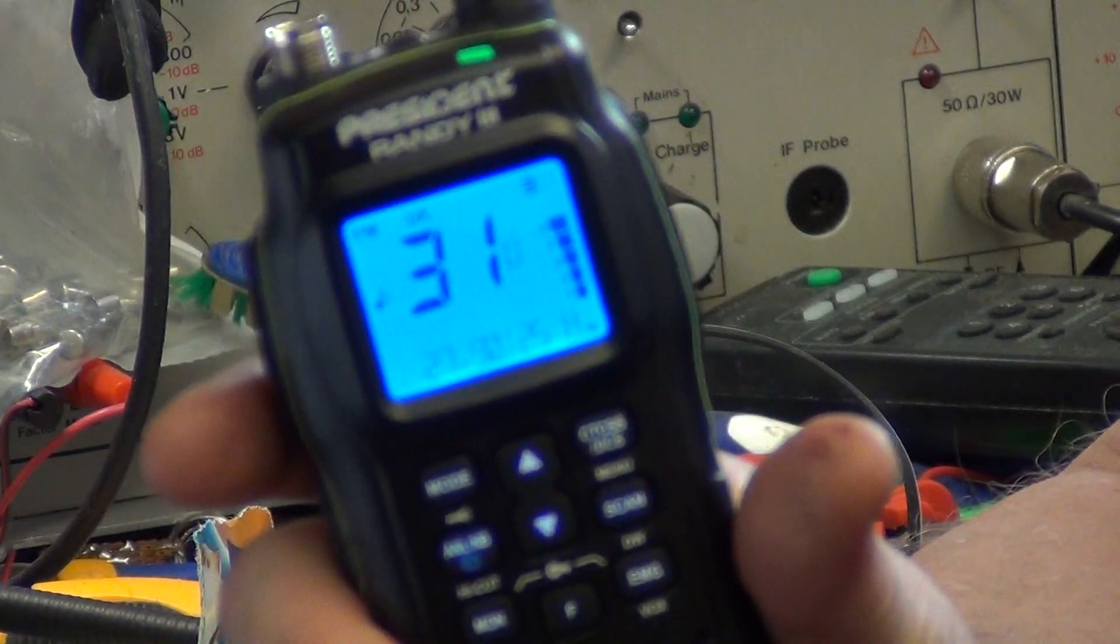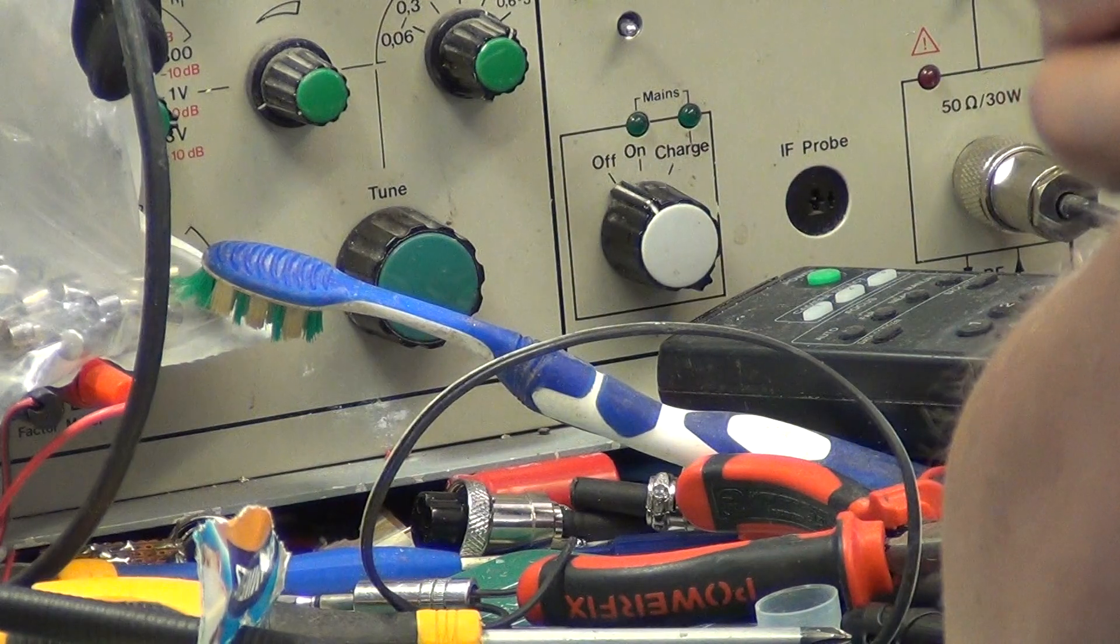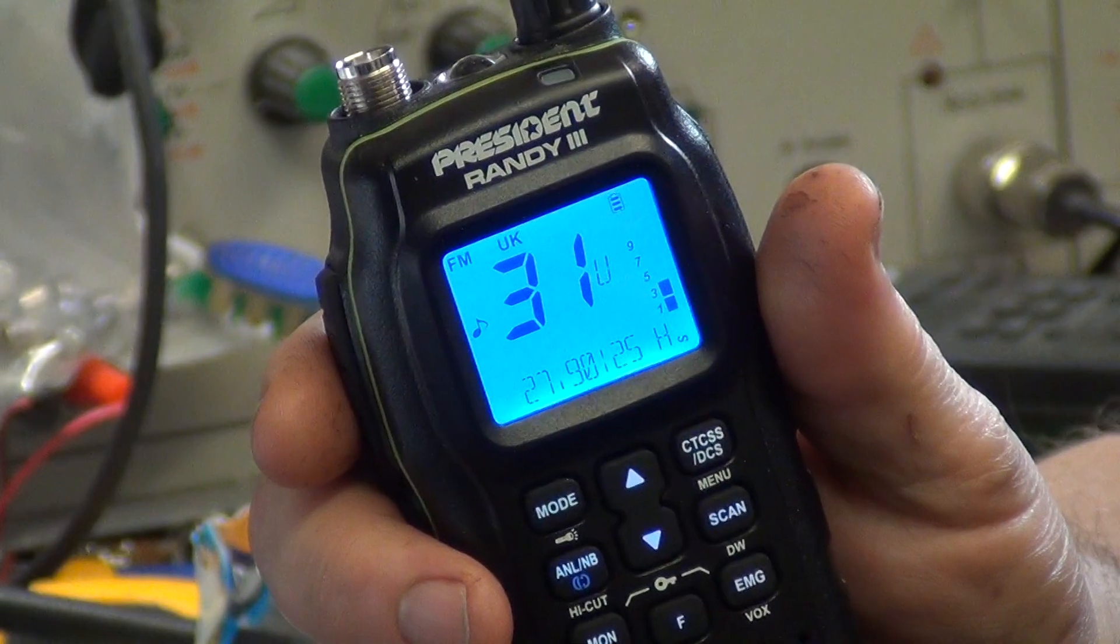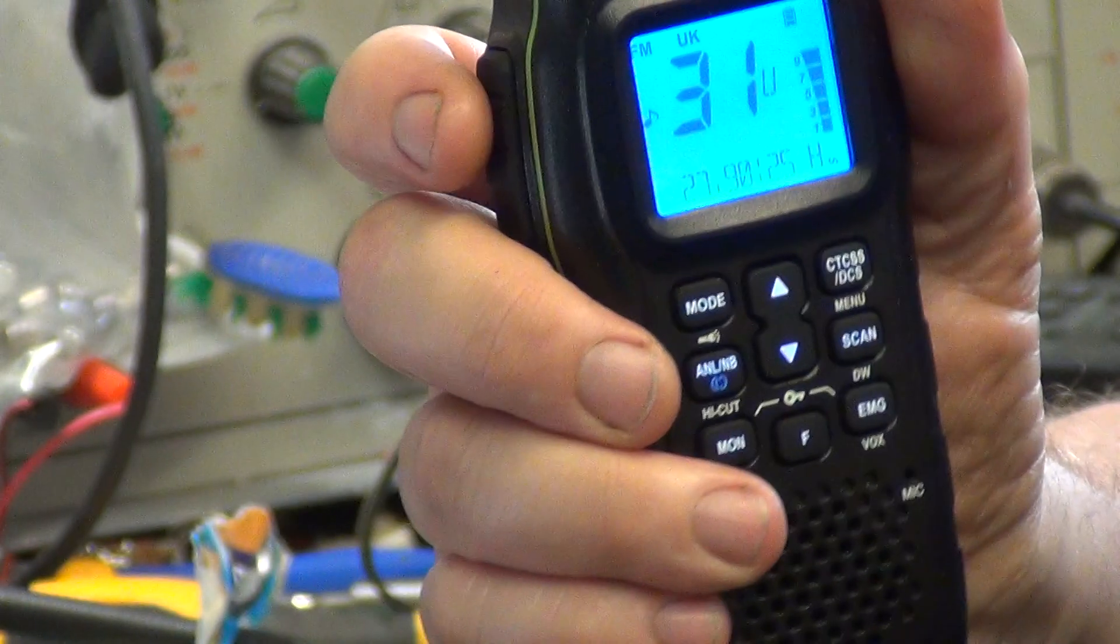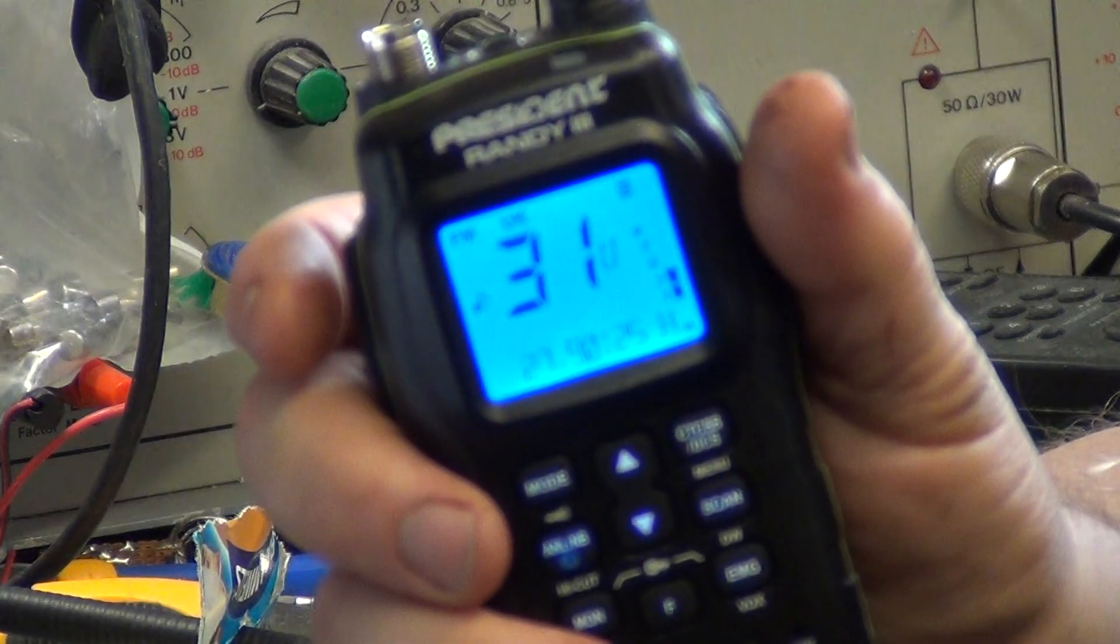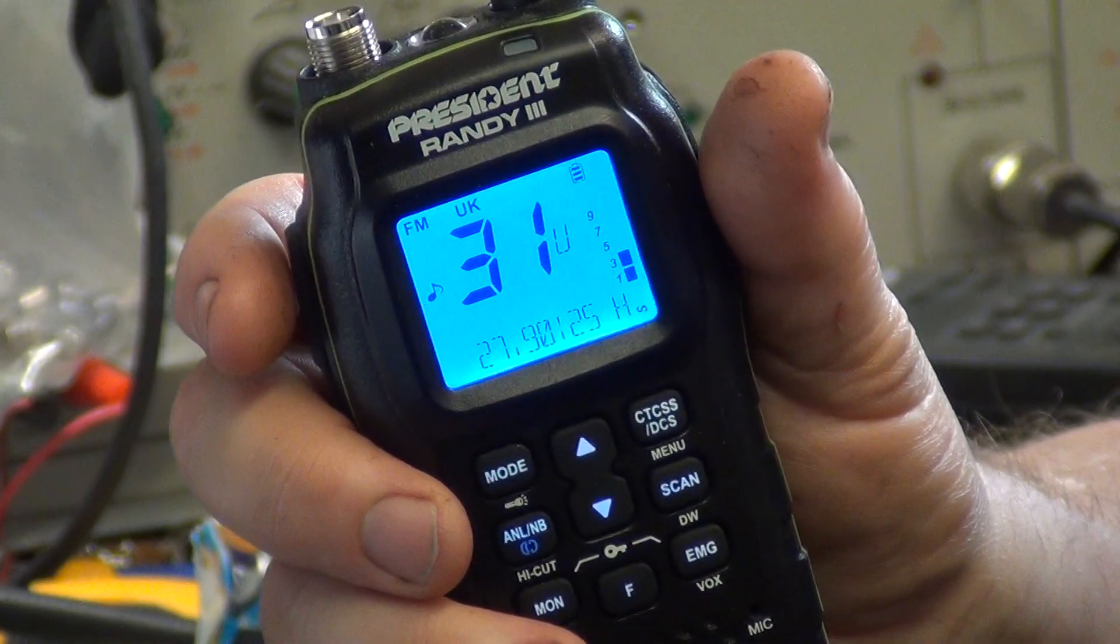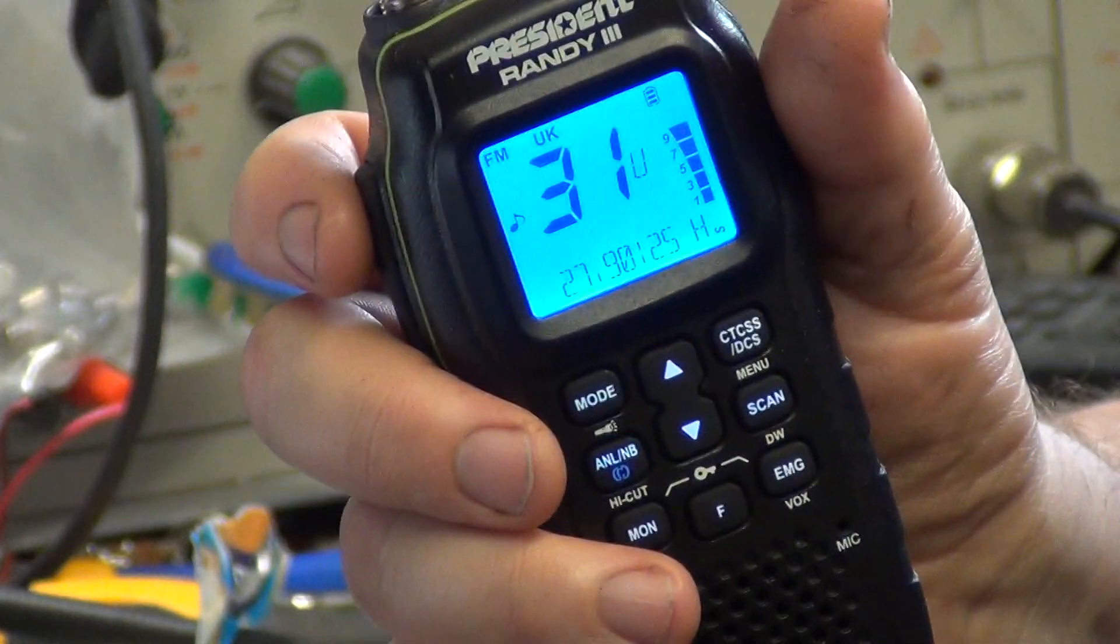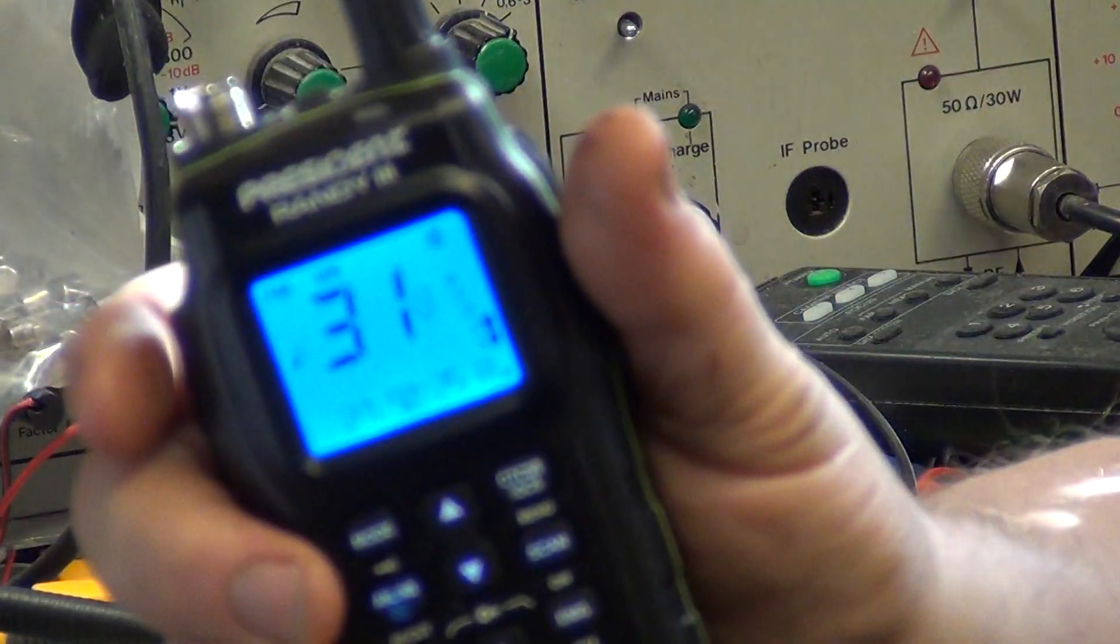Roger, got you at Ancaster service station. Roger, got you at Ancaster service station. Alright, we're now going through Ancaster crossroads. Roger, got you at Ancaster crossroads. Alright, we're now going over the top of the hill, going down towards Wilsford, over. Roger, got you at the top of the hill.